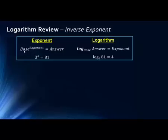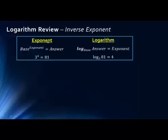In an exponential equation, you have three parts: a base, an exponent, and an answer. Here we have a base of three, an exponent of four, and the answer is 81 — because 3 times 3 times 3 times 3 equals 81. We can rewrite this same exponential equation as a logarithm, which also has those same three parts: the base, an answer, and an exponent, just in different places. A logarithm undoes an exponential, so it solves for the exponent — the logarithm equals the exponent.